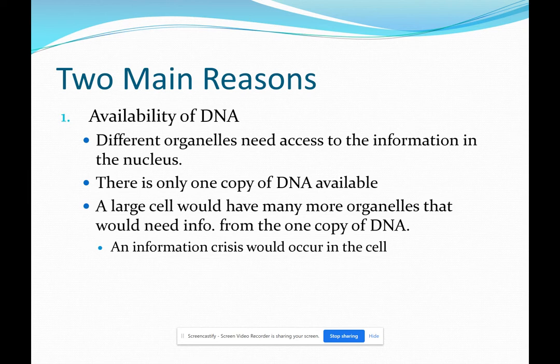Logically, a large cell would have to have more organelles because it would need more mitochondria to make more energy, more chloroplasts to make more sugar. It would need more proteins to function, so it would need more ribosomes and more rough ERs and smooth ERs and lysosomes. So that makes sense.